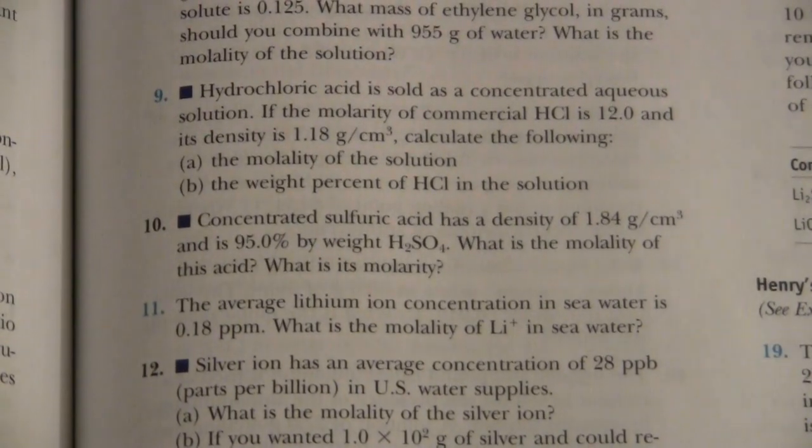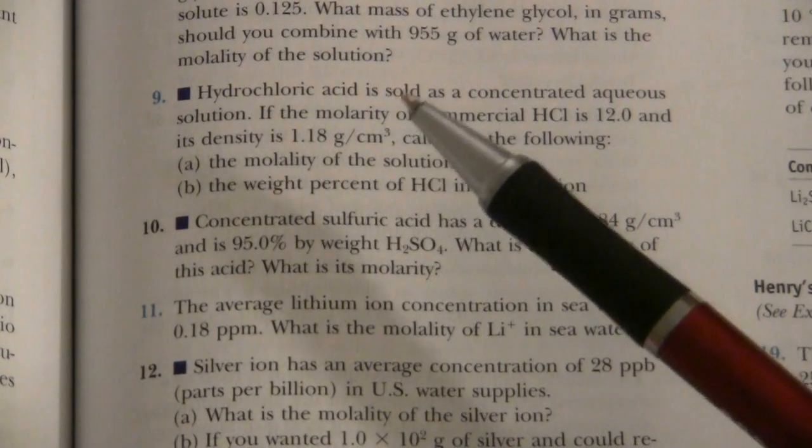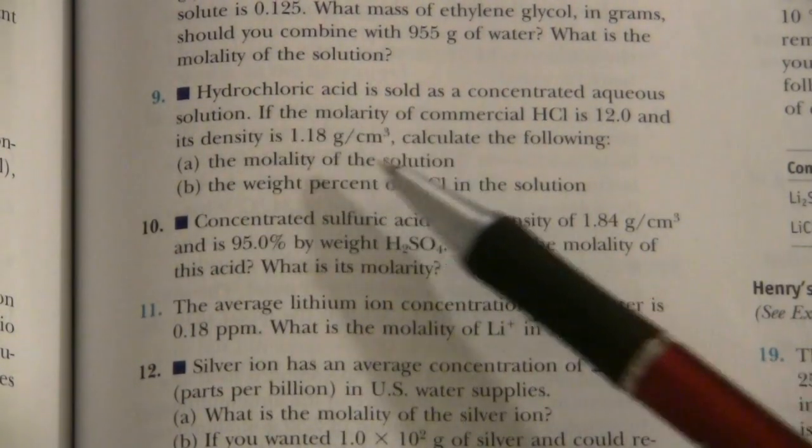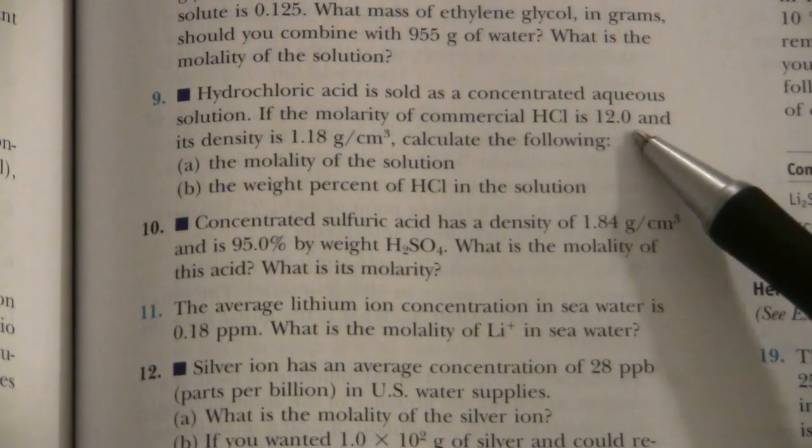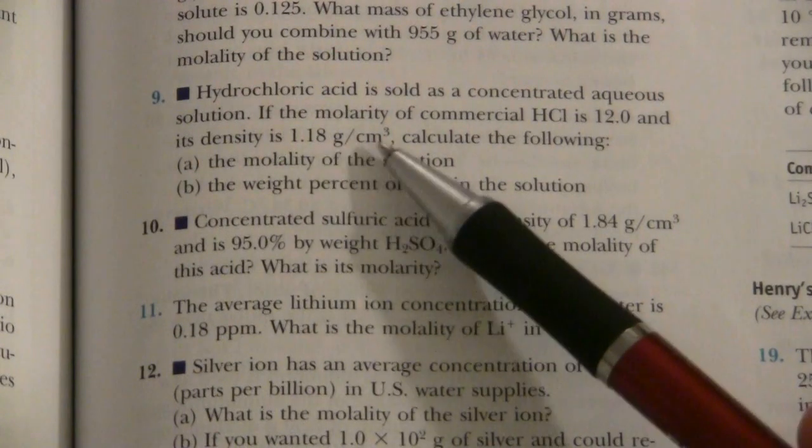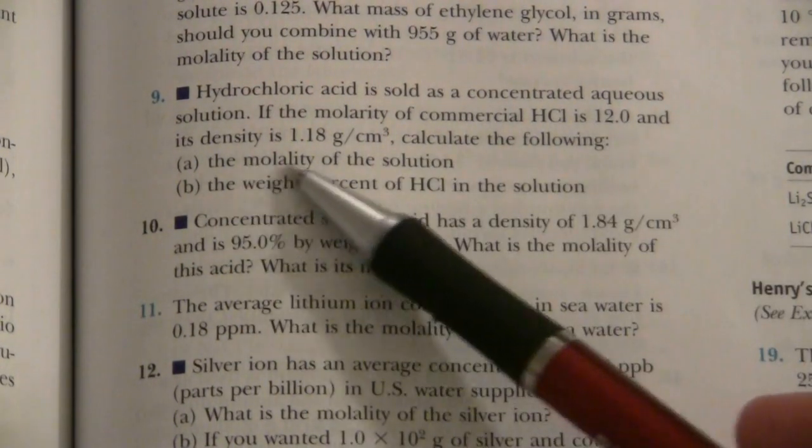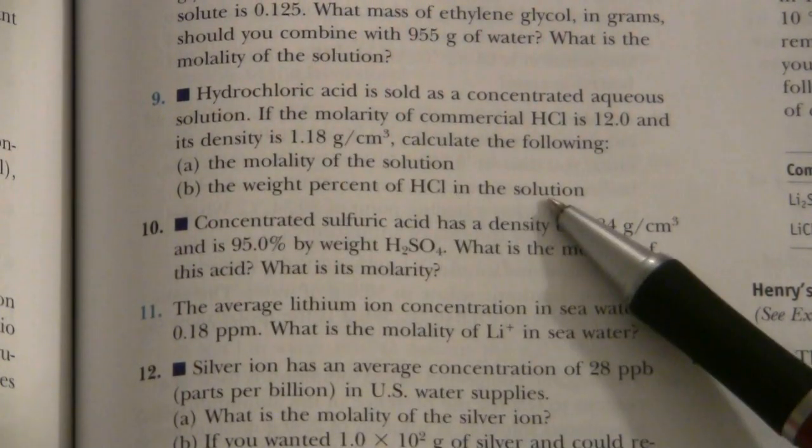All right, this problem says that hydrochloric acid is sold as a concentrated aqueous solution. The molarity of commercial HCl is 12.0 and its density is 1.18 grams per cubic centimeter. Calculate the following: the molality of the solution and the weight percent of HCl in the solution.